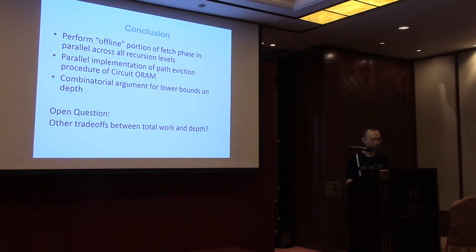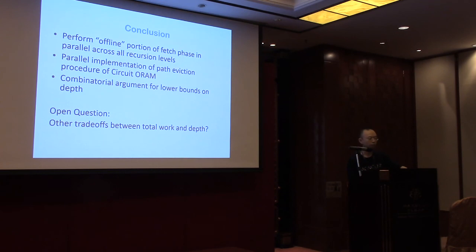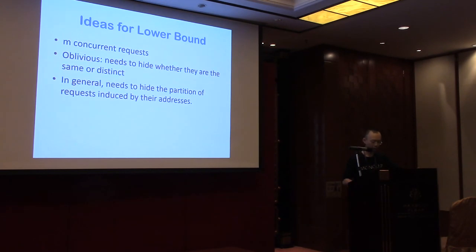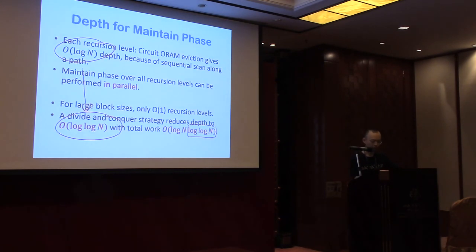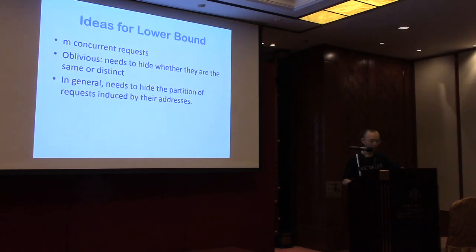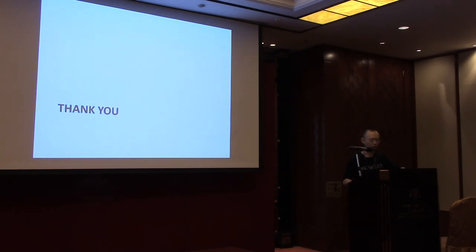To summarize: there are three main points. First, the offline-and-online routing trick lets us parallelize the work across recursion levels without increasing depth. Second, the divide-and-conquer approach in the maintain phase reduces depth. Third, a combinatorial argument shows the lower bound on depth because we must hide how N requests are partitioned. An open question is whether there is a further trade-off between total work and depth — it would be interesting to also establish a lower bound on that trade-off. Thank you.